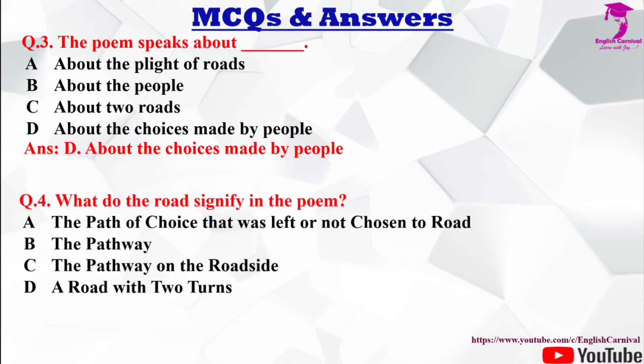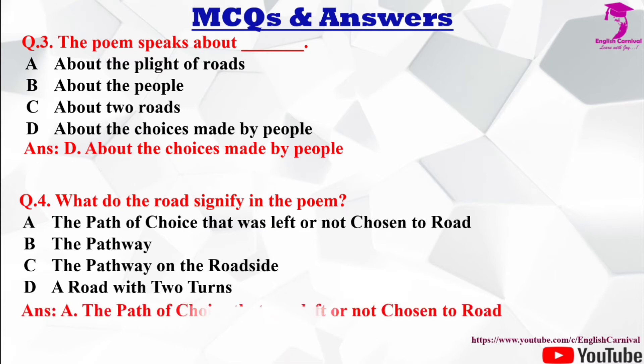Question number 4: What do the roads signify in the poem? Options: A) the path of choice that was left or not chosen, B) the pathway, C) the pathway on the roadside, D) the road with two turns. The correct answer is A — the path of choice that was left or not chosen.